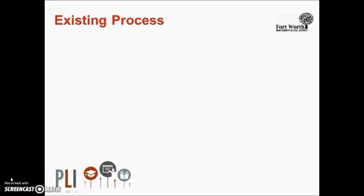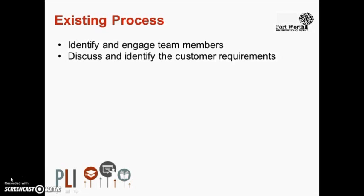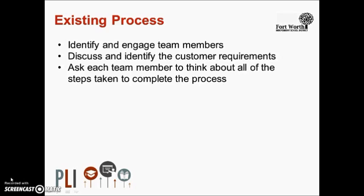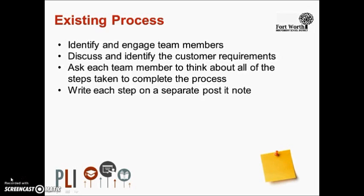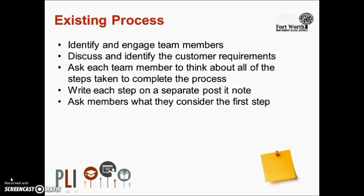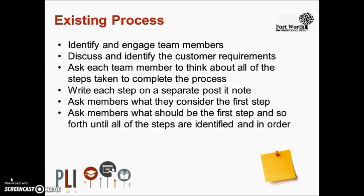Let's review the activity steps for redesigning an existing process. First, identify and engage team members — it is important to have employees actively engaged in the process so their perspective is considered. You may also want the team to establish group norms. Second, discuss and identify the customer requirements with the team. Third, ask each team member to think about all of the steps they take to complete the process and write each step on a separate post-it note, then arrange them in order. Once members share their first step, the activity reveals variation in how team members engage and complete the process, supporting the need to standardize.